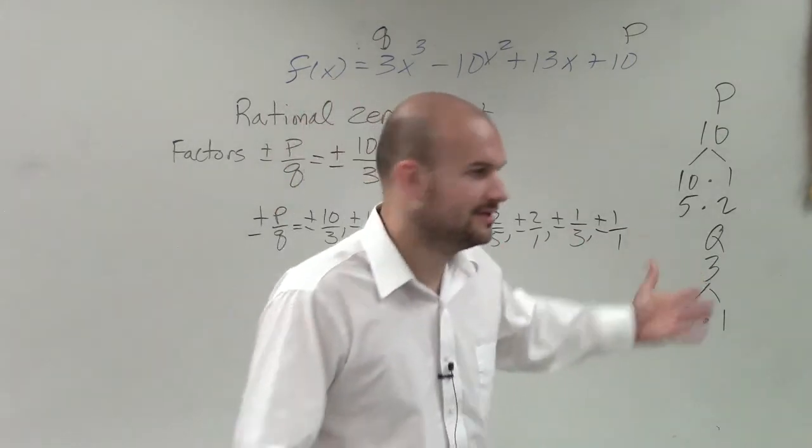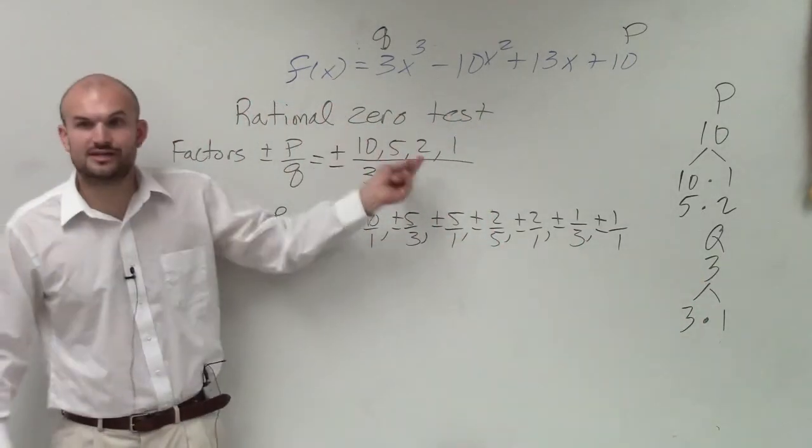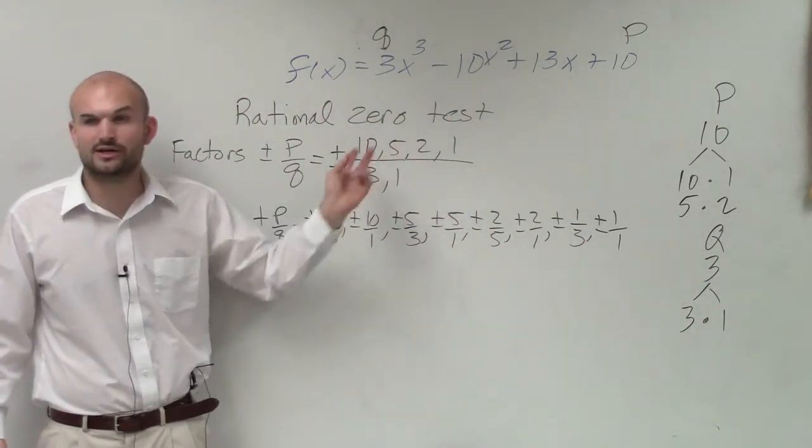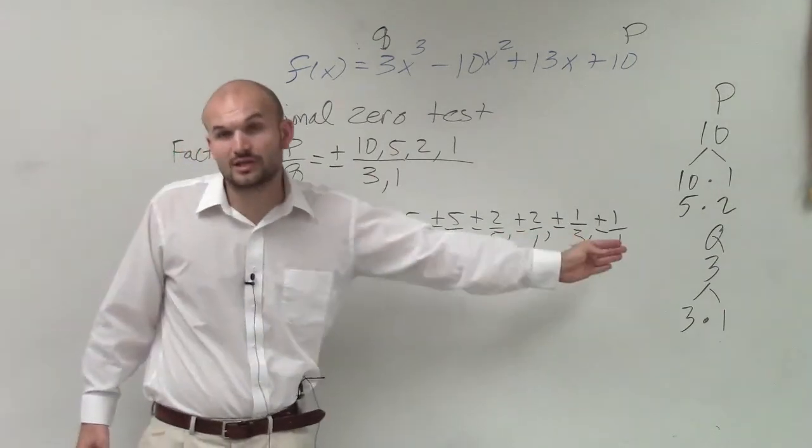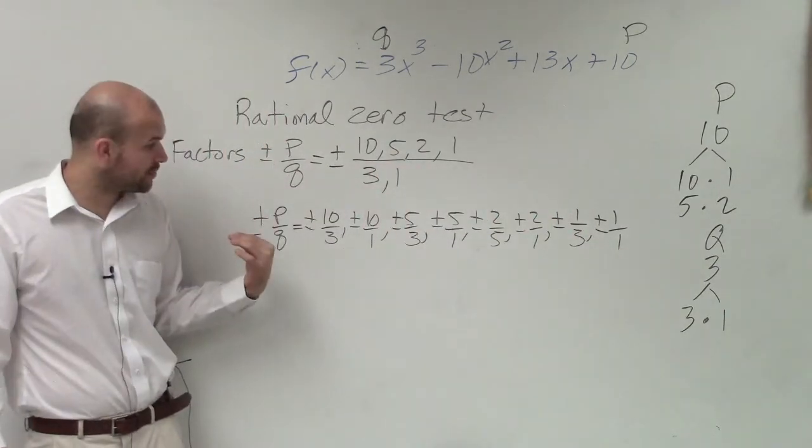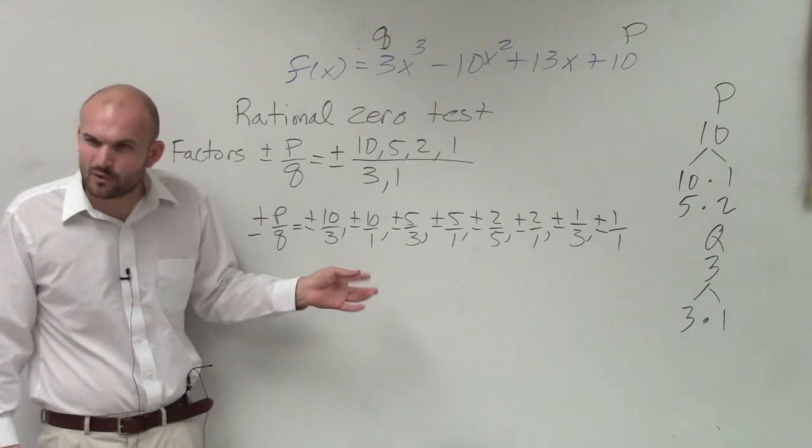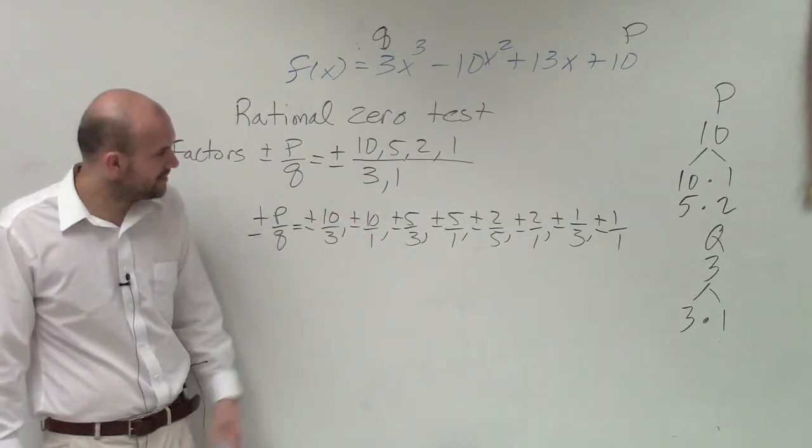Now, you see what I did? I just took each numerator and put it under each denominator. Then I did the next numerator and did it under each denominator. And you can see I have this whole long list. Now, I wrote every single thing broken out, but obviously you don't need to write 10 over 1. You can just write 10.